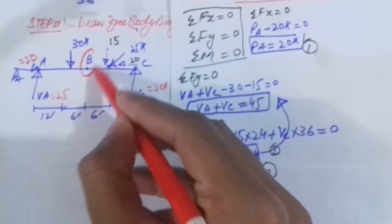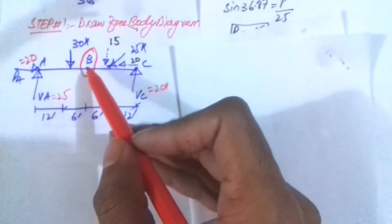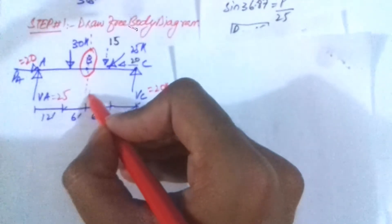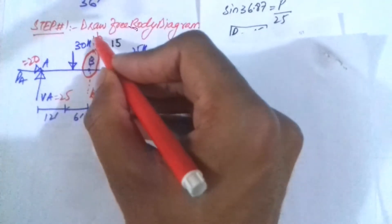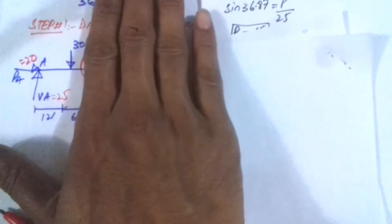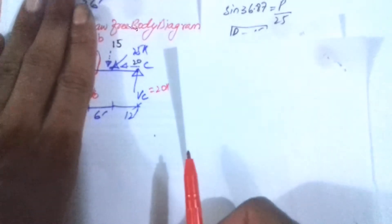The next step is to find the shear force and bending moment at point B. To calculate these, you cut the beam through that point using the method of sections. You can either use the left side or the right side of the cut. The trick is to use the side where the smallest number of forces exist, which minimizes calculations.